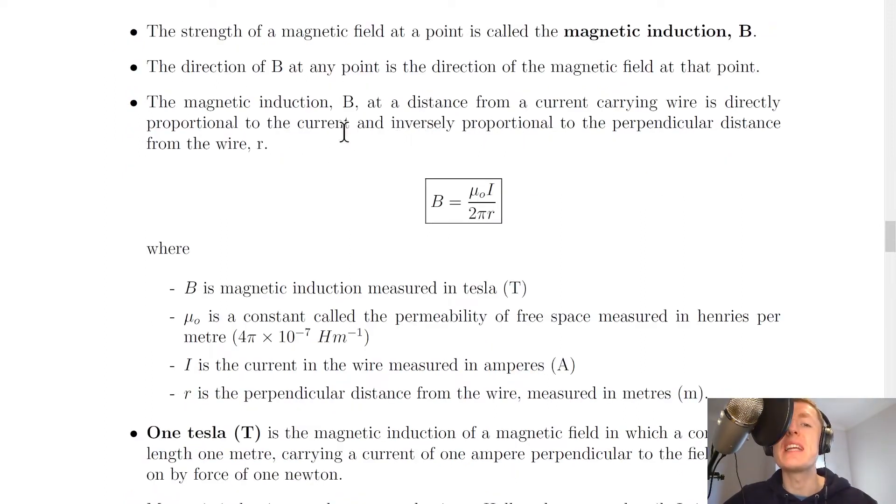The magnetic induction B at a distance from a current carrying wire is directly proportional to the current and inversely proportional to the perpendicular distance from the wire R.